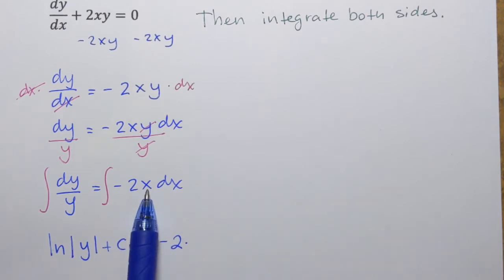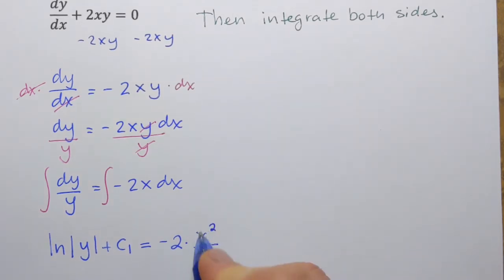So, integral of negative 2x is negative 2 stays. It's the constant. And integral or antiderivative of x is increase the power. So, it's x squared. And divide by that power plus c2.